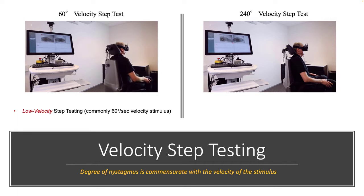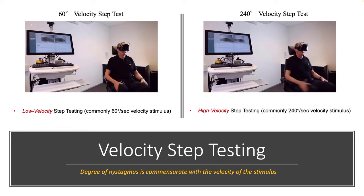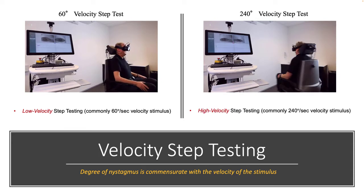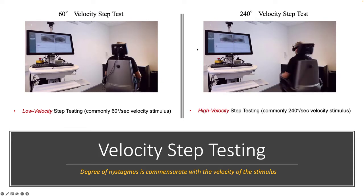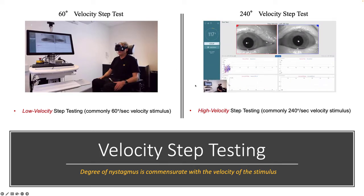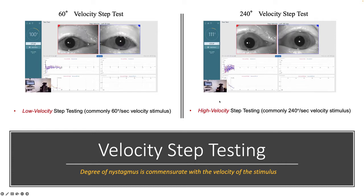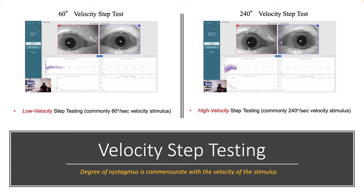Let's talk about velocity step testing — this is the second test we commonly do in the clinic. You can see two different profiles that we run: one is a fairly low stimulus profile at 60 degrees per second, and one is a fairly high velocity profile at 240 degrees per second, which is pretty fast — almost three quarters of a turn for every second.